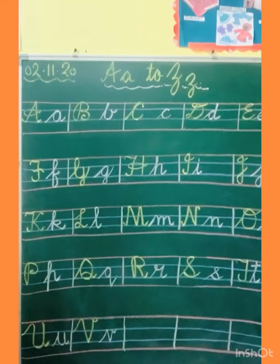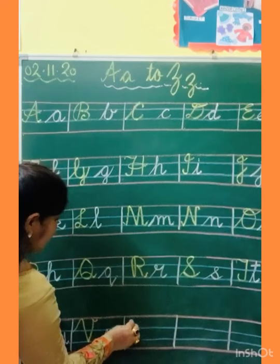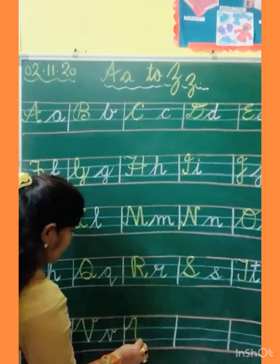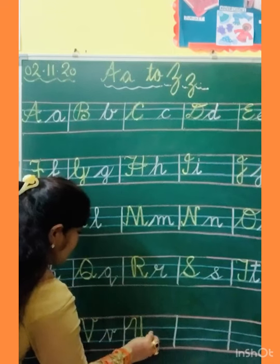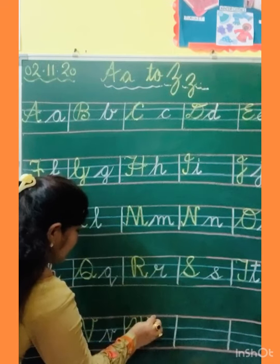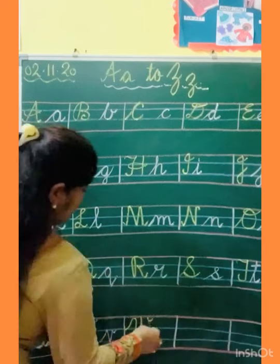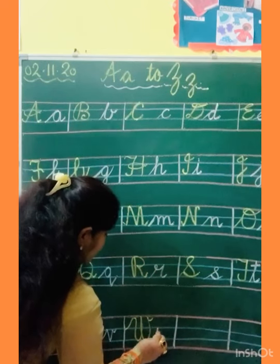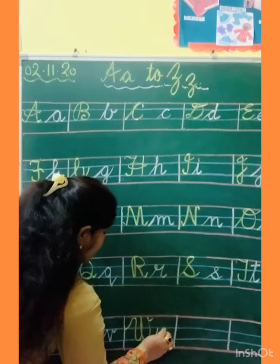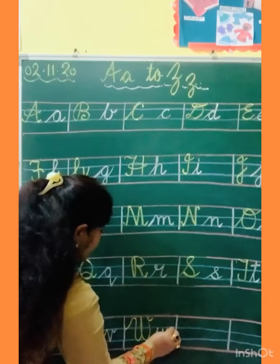After V, W. Capital W: slanting line, turn, come down, go up, come down, go up, and kick. This is capital W. And now small W: slanting, come down, go up, come down, go up, and kick.